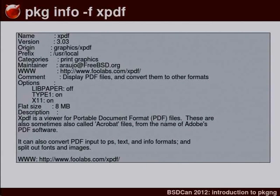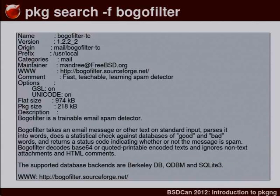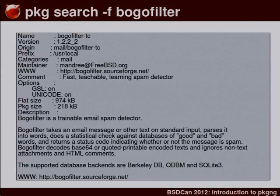We have a lot more metadata than before. For example, if you install xpdf you can use the new -f option to package info and see all available information. All the options used while building the package are tracked. You can also get the same information from the remote repository, so before installing a package you can check whether it has the options you want. You can also know the download size and disk space required.